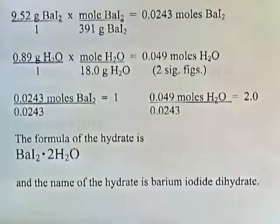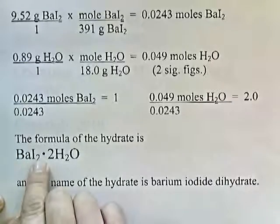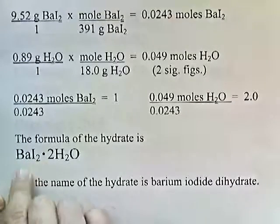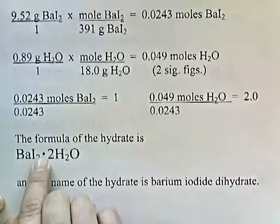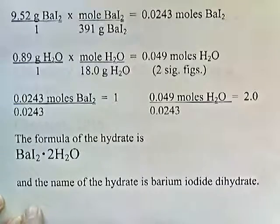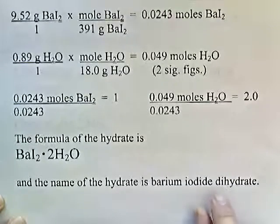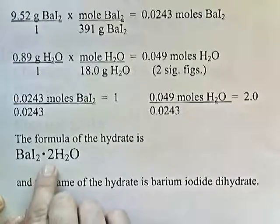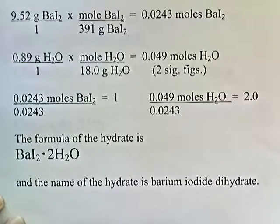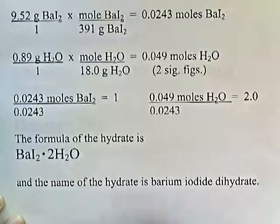So the formula of the hydrate is going to be BaI2·2H2O. And the name of the hydrate is barium iodide dihydrate. Di because that's the prefix for 2. So there's our formula and there's our name.